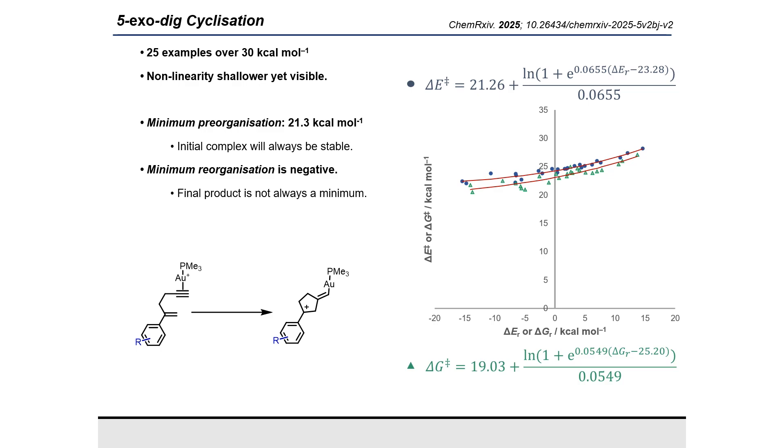In particular, no matter how favored the reaction is, given similar substituents, one would always expect a minimum pre-organization energy of 21 kcal per mole. This means that the initial complex will always be stable regardless of driving force, and so one would expect a significant energy input before reaching the transition state.